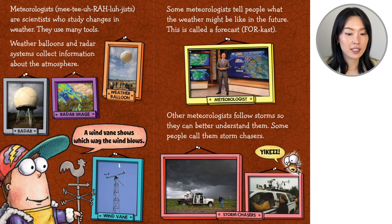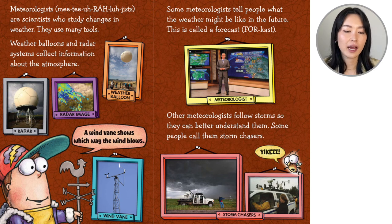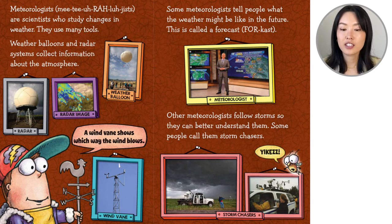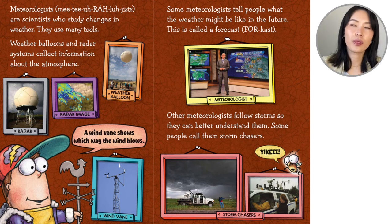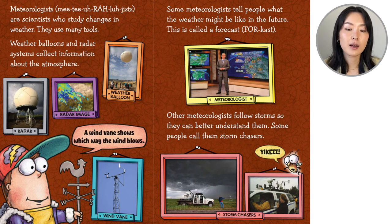Meteorologists are scientists who study changes in weather. They use many tools. Weather balloons and radar systems collect information about the atmosphere. Here we have a radar image and a weather balloon. Buzz says a wind vane shows which way the wind blows. Some meteorologists tell people what the weather might be like in the future — this is called a forecast, what the weather will be like tomorrow or a week from now. Other meteorologists follow storms so they can better understand them. Some people call them storm chasers. Yikes!